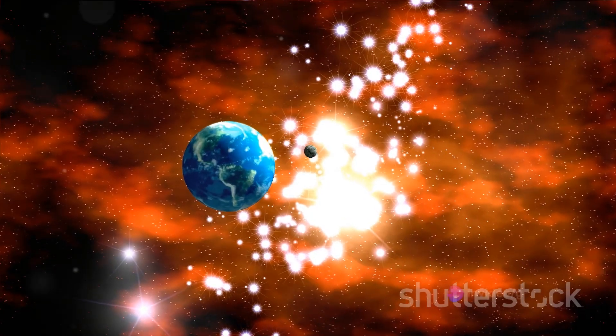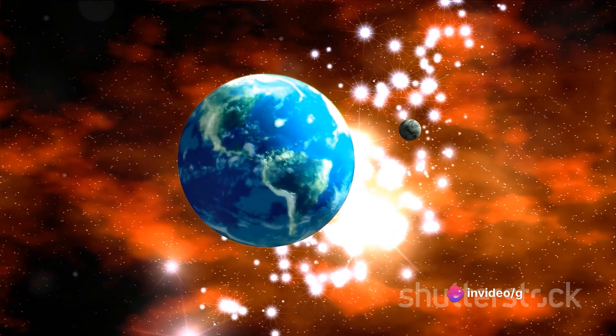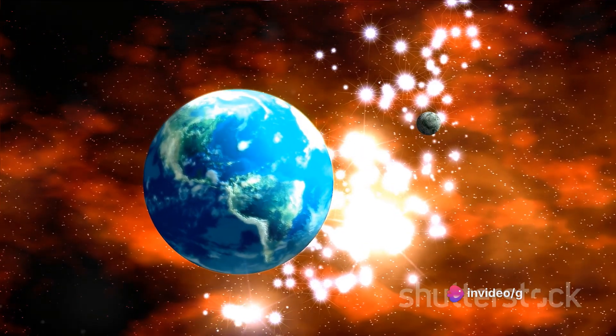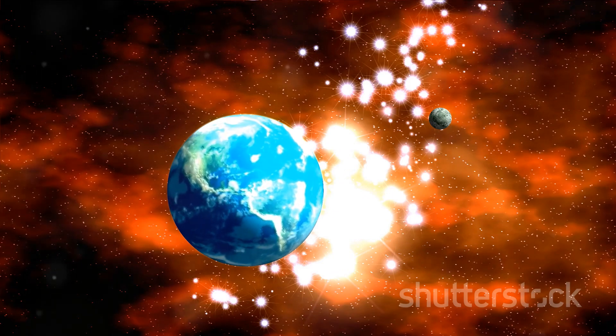In addition, Earth developed a protective atmosphere, a shield against harmful solar radiation. This atmosphere also helped maintain a stable climate, trapping some of the sun's heat to prevent our world from freezing over.